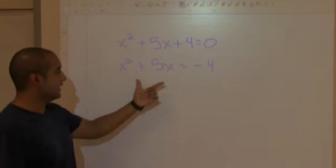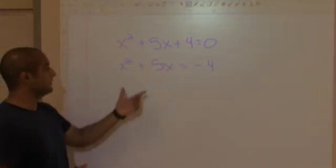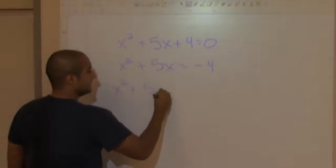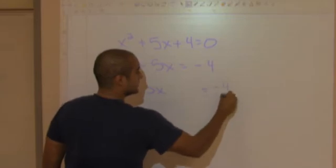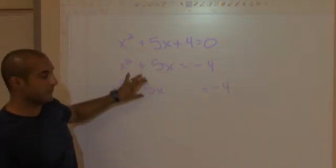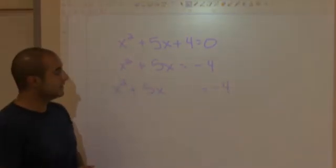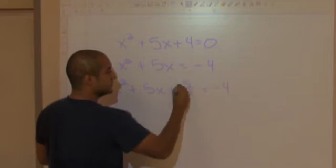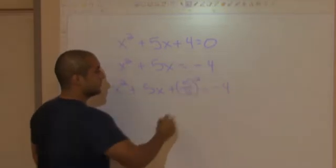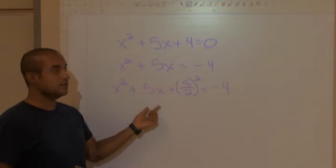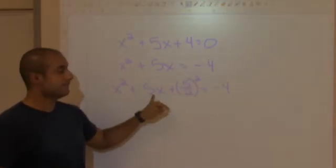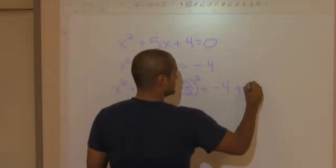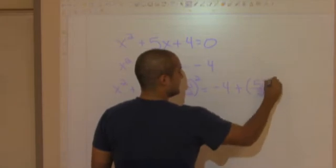So I'm going to start completing the square. I'll rewrite this: x squared plus 5x, leave a space, equals negative 4. To complete the square, I look at this number in front of x — in this case it's positive 5. So I add 5 over 2 squared to the left side. Remember, you always divide b by 2 and square it. Since I added that on the left side, I have to do the same on the right side — plus 5 over 2 squared.